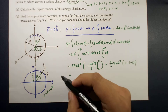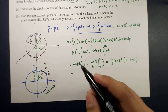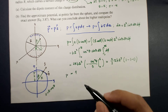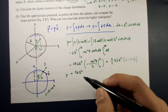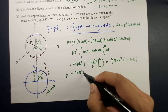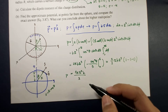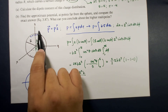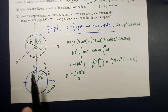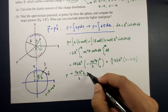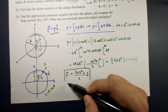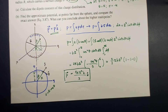So the dipole moment p is now equal to 4πR³k/3, directed in the z-hat direction. Because the negative charge is on the bottom and the positive charge is on top, the direction is upward, which is also reflected in our diagram. So this is your dipole moment due to this charge configuration.